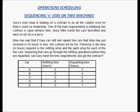Let us look at another example of sequencing jobs on two machines. Gary's auto shop is bidding on a contract to do all the custom work for Mike's used car dealership. One of the main requirements in obtaining this contract is rapid delivery time, since Mike wants the cars facelifted and back on his lot in a hurry. Mike owns a used car dealership and Gary, who owns an auto shop, is bidding for this contract. The auto shop with the best delivery time will get the contract.